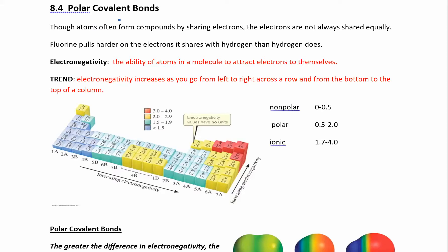Let's look at different types of covalent bonds. You can have a polar bond or a nonpolar bond. Polar bonds mean you're sharing electrons unevenly — one atom is attracting the electrons more than the other. The atom that attracts electrons more is the more electronegative one. Electronegativity is the ability of an atom in a molecule, within a bond, to attract electrons to itself. It turns out that fluorine is the most electronegative atom.